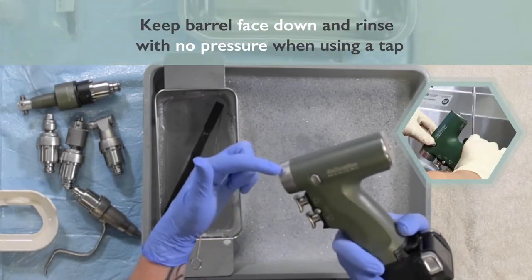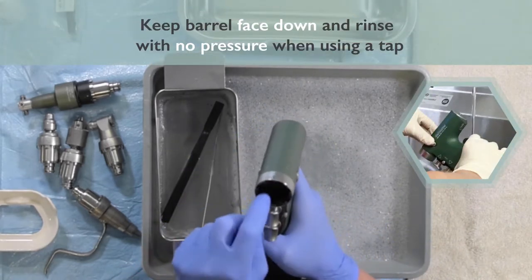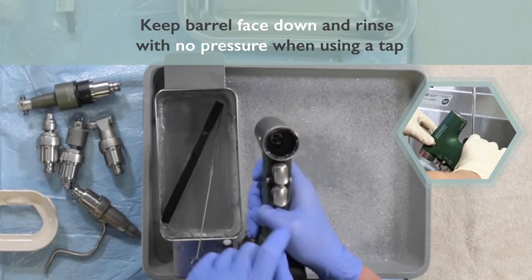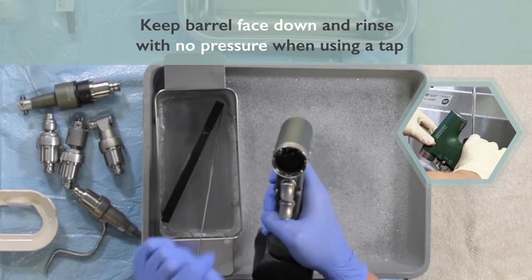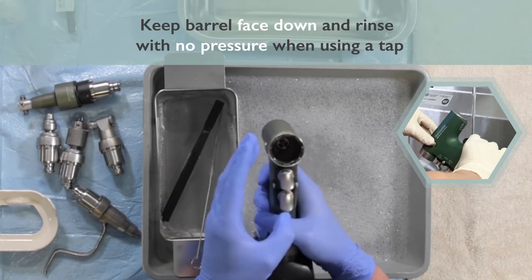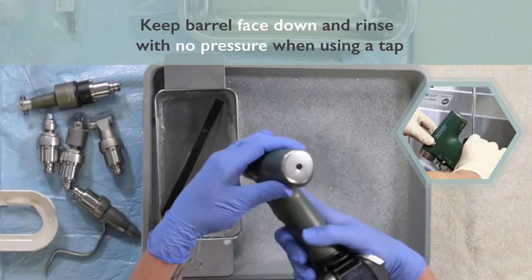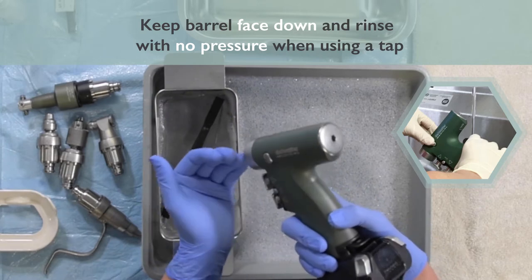Water should always be gentle and low pressure, and should always be run through the back of the hand piece, not the front. The front of the hand piece does have gaskets and bearings that help the motor to function properly. We can cause damage by using high pressure water or brushes here. Again, water should always be going through the back of the hand piece to the front.